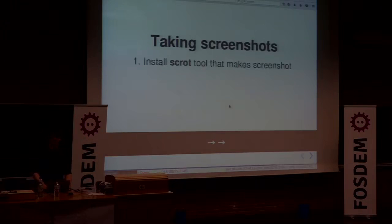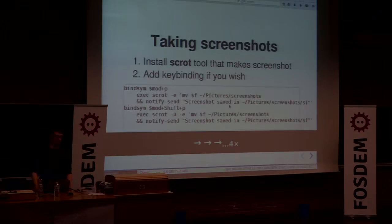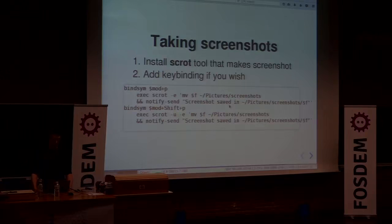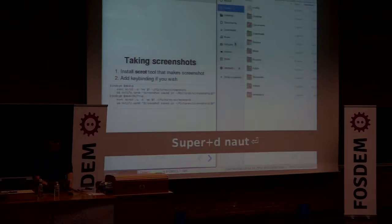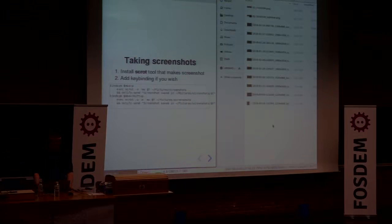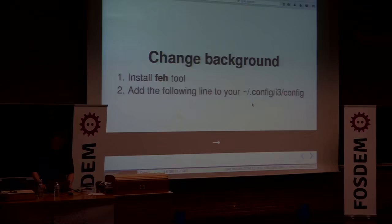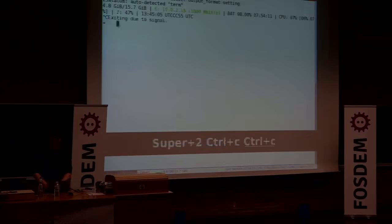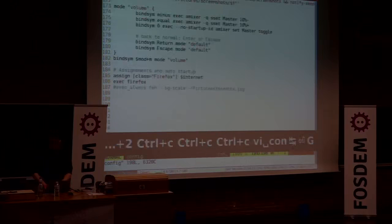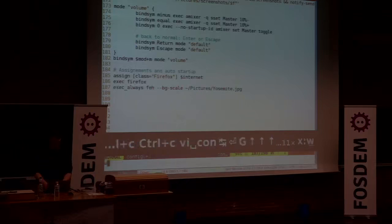Taking screenshots — you can't do that by default with i3, so you need to install a tool. I use scrot, and I've bound mod plus P and mod shift plus P to take screenshots. Let me show you — it's not fake. I go to the folder where screenshots are saved, press mod plus P, and I get a nice screenshot of what I just did.